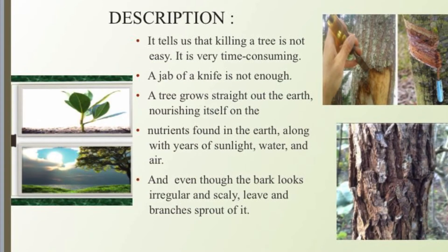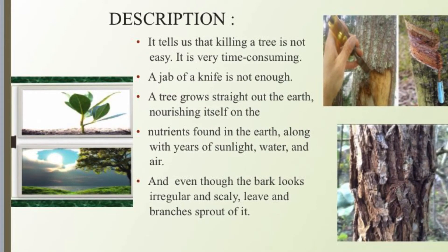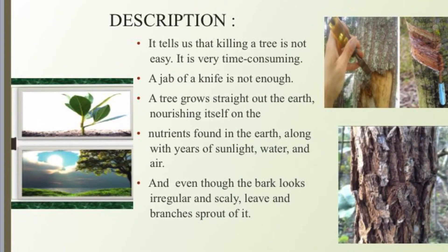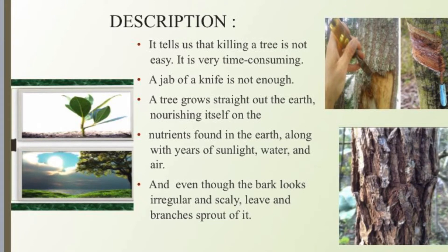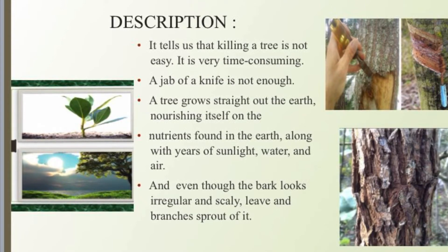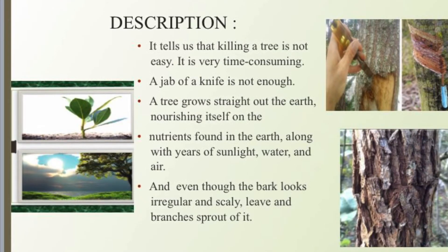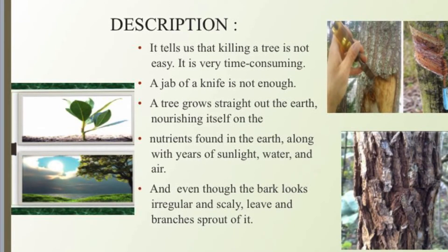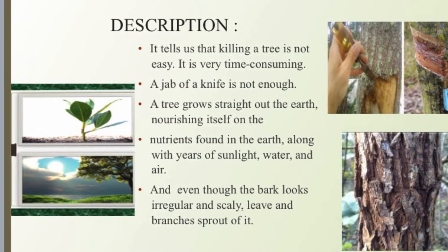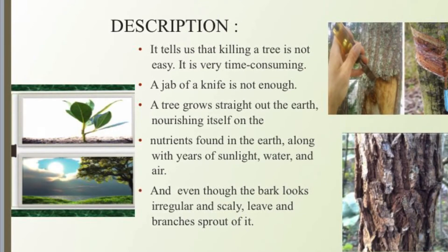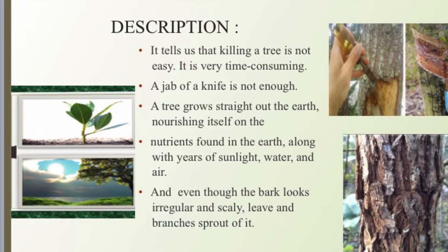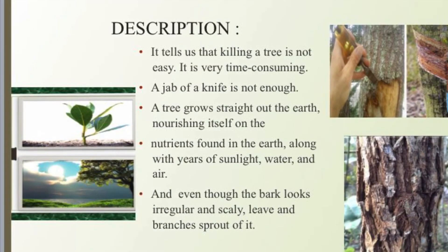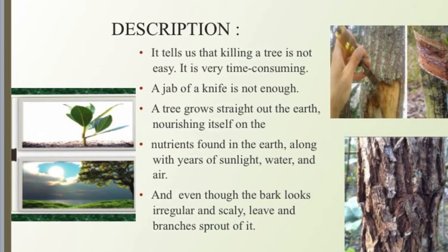In stanza 1, the poet tells us that killing a tree is not easy and takes a lot of time. Simply a jab of a knife is not enough, because a tree grows straight out of the earth, nourishing itself on nutrients found in the earth along with years of sunlight, water, and air. It also tells us that even though the bark looks scaly and discolored, leaves and branches do grow out of it.